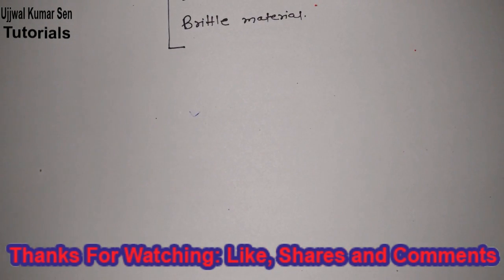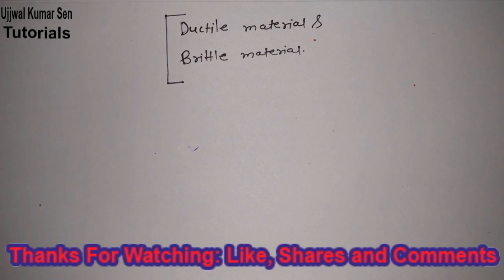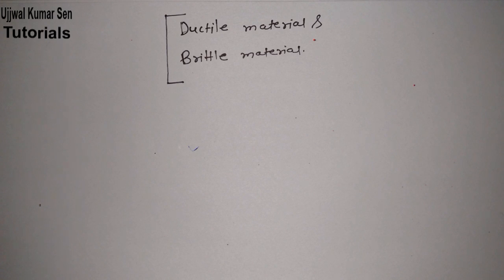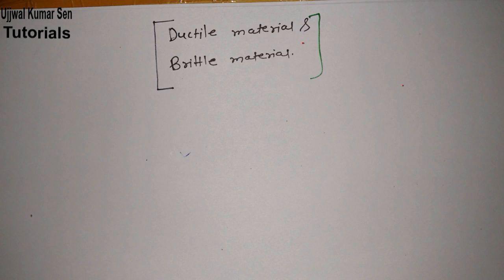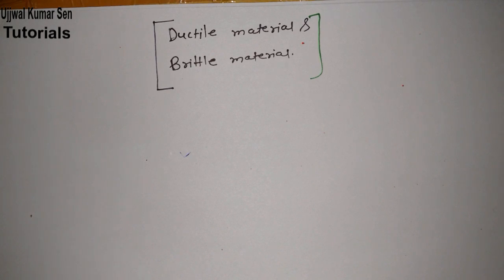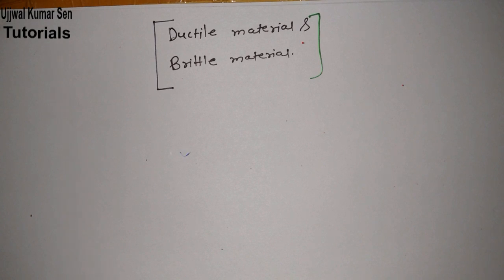In this video tutorial you are going to learn about ductile material and brittle material. I'm going to share some inside information about these two materials so you can have better knowledge about these topics. Basically, what is a material? It's all about structure — crystalline structure, non-crystalline structure — which has mass and shape. That is known as a material, and it can also be a solid.